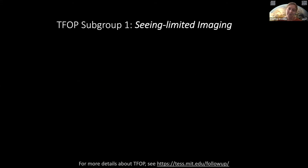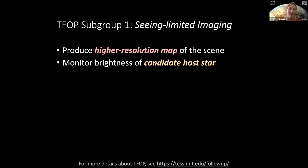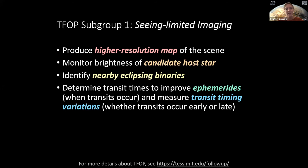The first of those groups is seeing-limited imaging. One of the things I love about this group is that it includes many amateur astronomers and many undergraduate institutions that have telescopes that might be seen as too small to do astrophysics — but that's not true at all. You can do great astrophysics with a backyard telescope. What they do is observe a field of the sky including the TESS target star and nearby stars, monitor the brightness of those stars over time, and see which objects look dimmer. By producing a higher resolution map of the scene than TESS, which has pixels of 20 by 20 arc seconds, they can figure out whether the candidate host star actually gets dimmer, and if not they can identify nearby eclipsing binaries as the source of the transit-like event. Subgroup one can also figure out better transit times, which allows us to better estimate when to observe the system with James Webb or Hubble, and measure transit timing variations — a way of measuring planet masses without getting radial velocities.